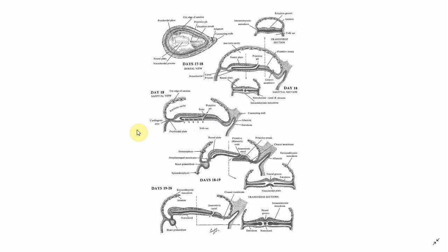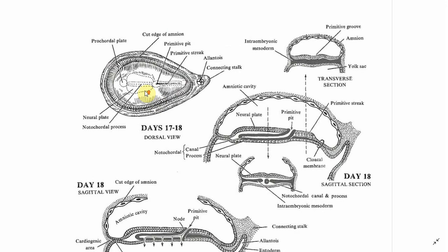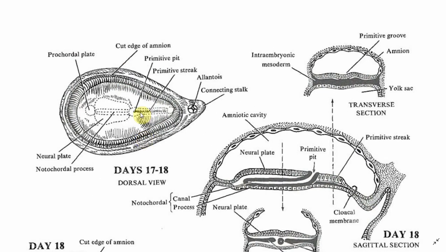I have a picture where we can understand this process in a much better manner. In this picture we are looking at the top view again, and this point is the primitive node, also called Hensen's node. Between the ectoderm and the endoderm, there is a formation of what we call the notochordal process. The formation of the notochordal process takes place below the primitive node.